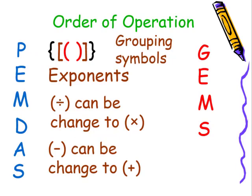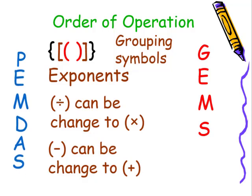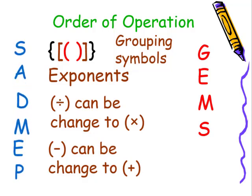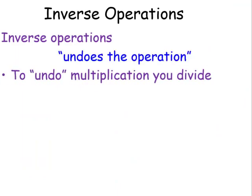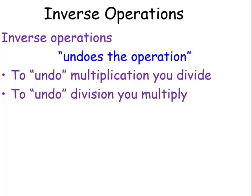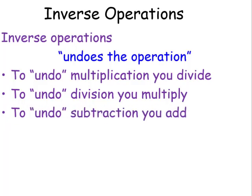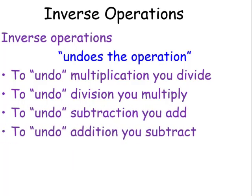When we're simplifying numerical expressions, we use PEMDAS or GEMS. Now to solve equations, we're going to kind of work backwards. So it's going to be like SAB, MEP, or SMEG. Inverse operation undoes the operation. To undo multiplication, you'll divide. To undo division, you'll multiply. To undo subtraction, you'll add. To undo addition, you will subtract.